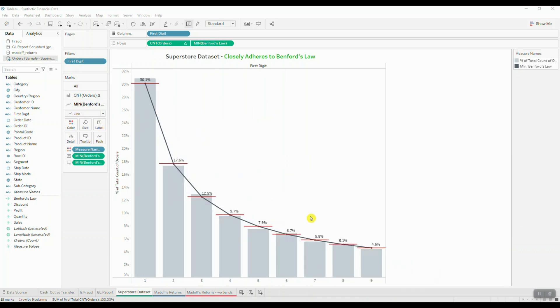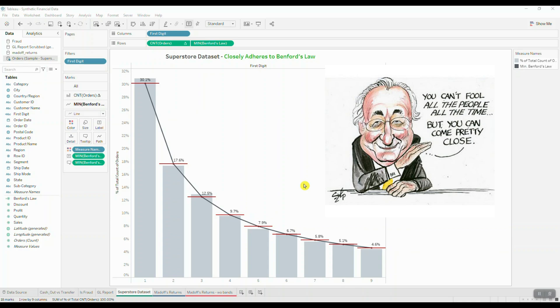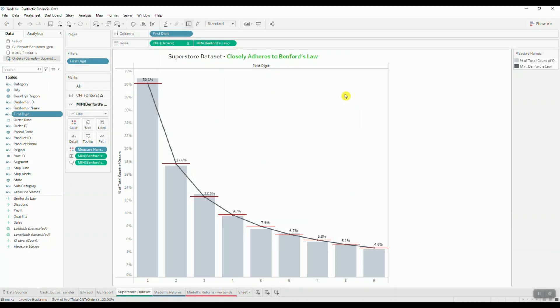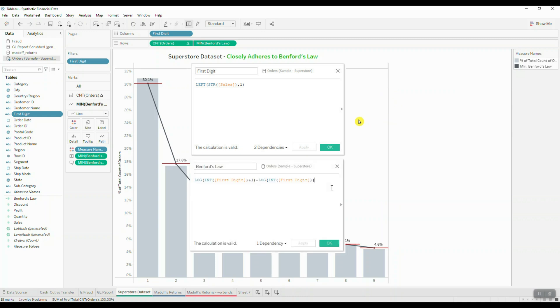So now let's apply the same analysis to Madoff's monthly return statements. The first thing we need to do is extract the first digit from the value we are analyzing using this formula right here, and the second step would be to create another calculated field that gives you the frequencies predicted by Benford's law.